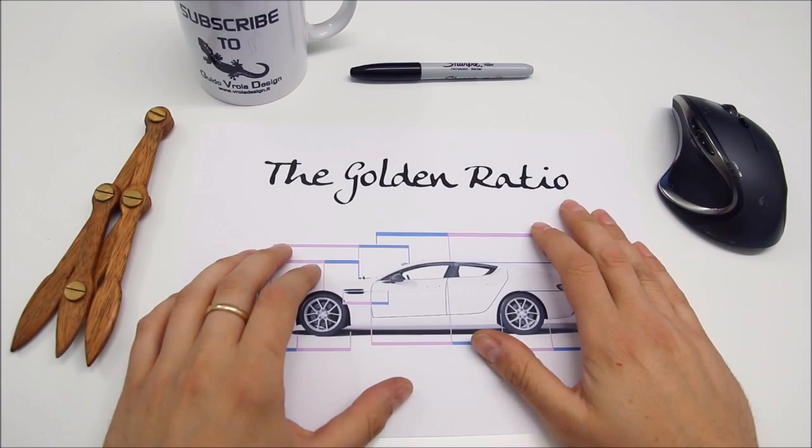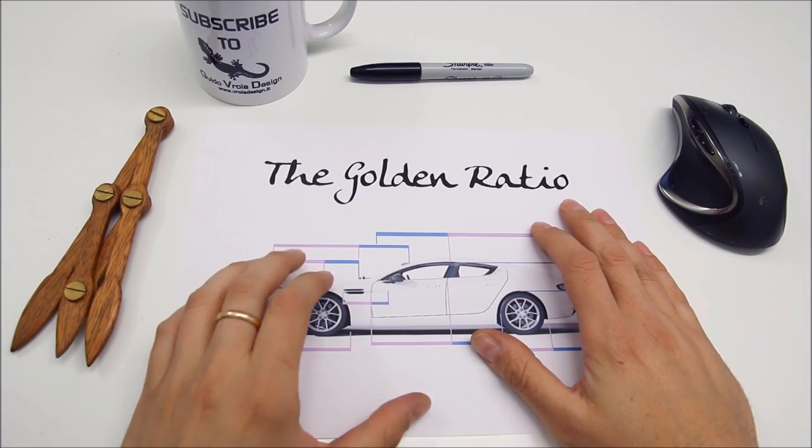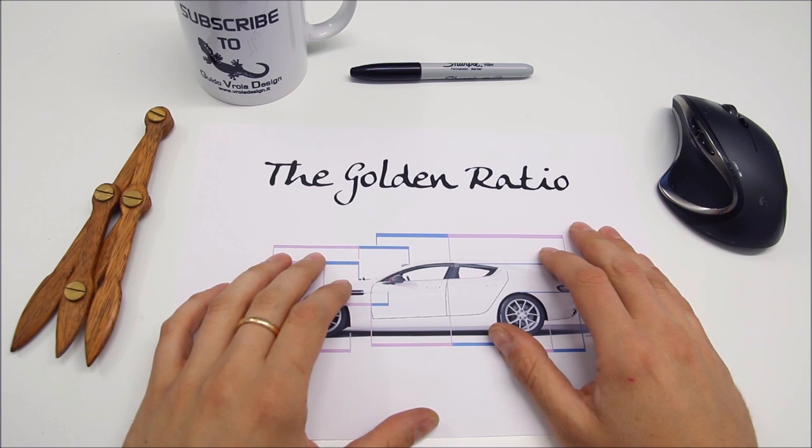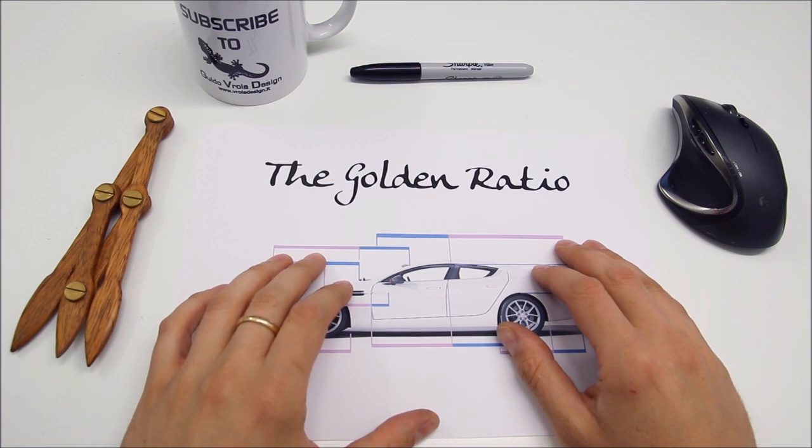I don't want to go too deep with the mathematics that are at the base of this proportion because if you are interested in it, you can find tons of books on this topic, but I think that this should be boring for most of you. I just want to show you the many reasons why you should take this into account in your design or in your picture composition.